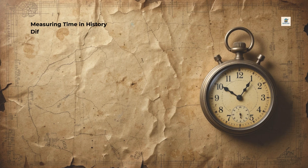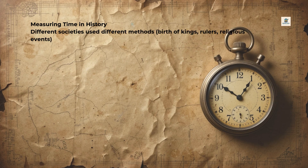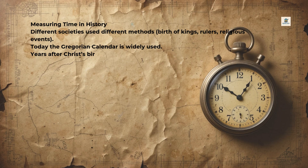Measuring time in history: different societies use different methods — birth of kings, rulers, religious events. Today the Gregorian calendar is widely used. Years after Christ's birth are called AD or CE. Years before Christ's birth are called BC or BCE. There is no year zero in the Gregorian calendar.